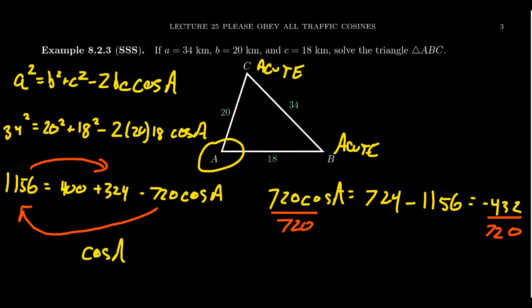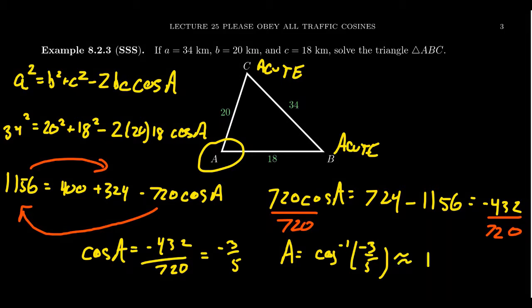Divide both sides by 720. This gives us cos A equals negative 432 over 720. We can simplify this fraction. It simplifies just to negative 3/5. And then to solve for A, we will take cosine inverse of negative 3/5. Pay attention to your calculator—are you in degrees or radians? I'm going to do this one in degrees. You would end up with approximately, rounded to the nearest degree, 127 degrees.